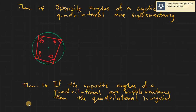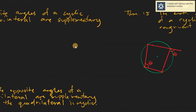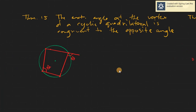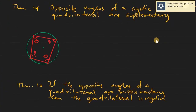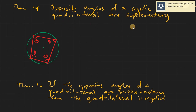Assalamualaikum warahmatullahi wabarakatuh. Good day again, everyone. Today we will be learning about Theorem 14 and Theorem 16. You will notice it skipped Theorem 15, which is somewhat different — it talks mainly about cyclic quadrilaterals. Theorem 14 and 16 are really related because Theorem 16 is simply the converse of Theorem 14: opposite angles of a cyclic quadrilateral are supplementary.